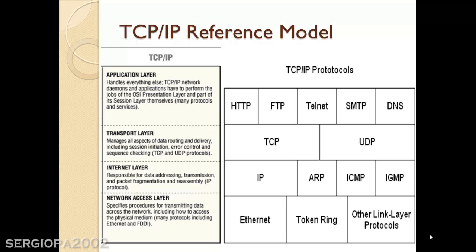We have the network access layer, which is really equivalent to the physical layer in the OSI and specifies the procedures for transmitting data across the network, including how to access the physical medium. I would say it's a combination of the data link and the physical layers of the OSI. The protocols in place here are Ethernet, Token Ring, and other network protocols.